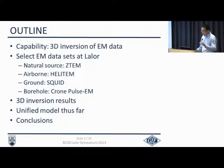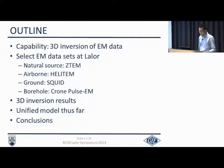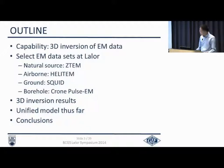Just a brief outline. We are now capable of inverting any type of EM data set in 3D in UBCGIF. We have developed all different kinds of codes — time domain, frequency domain, natural source, controlled source, potential field — all kinds of data sets collected in mining geophysics. For this particular site, we're going to concentrate on four types: natural source, airborne time domain, ground time domain, and borehole time domain.